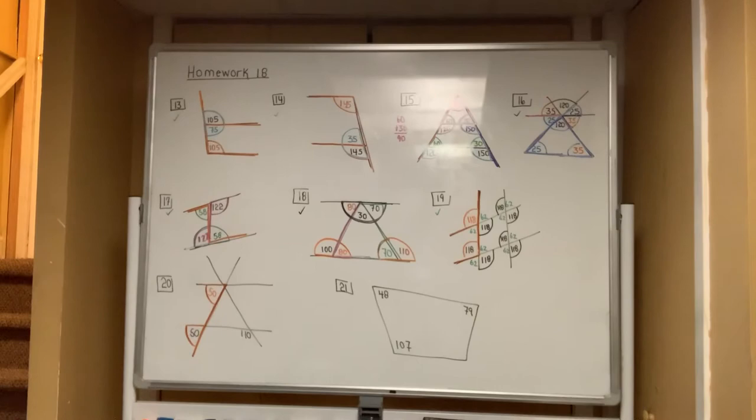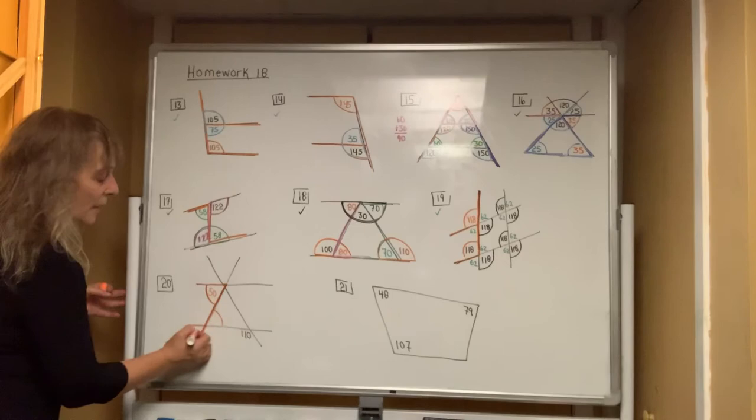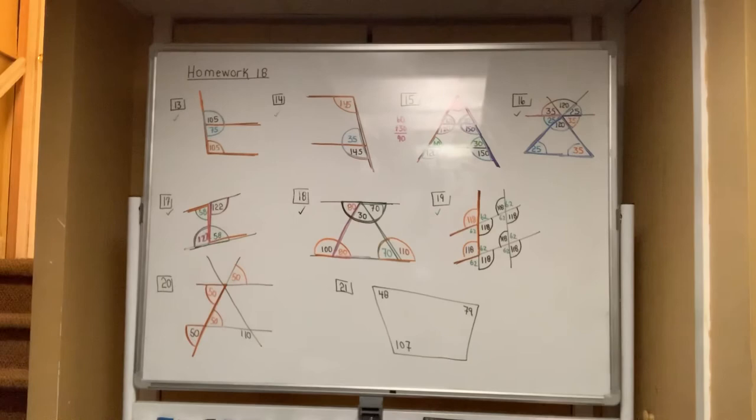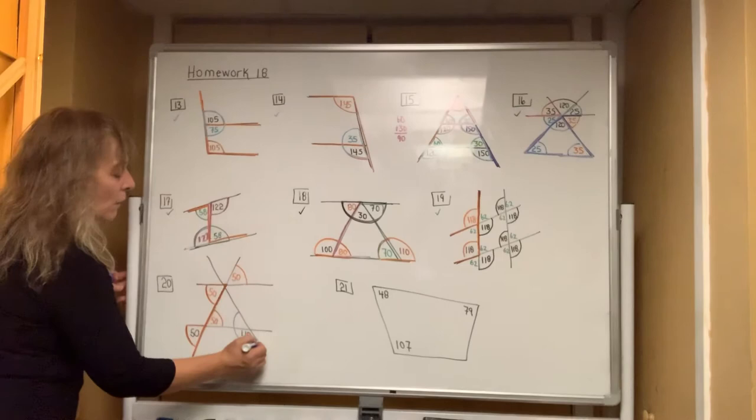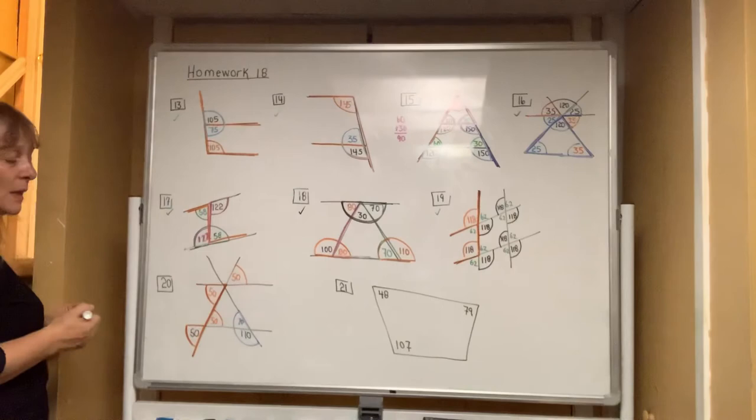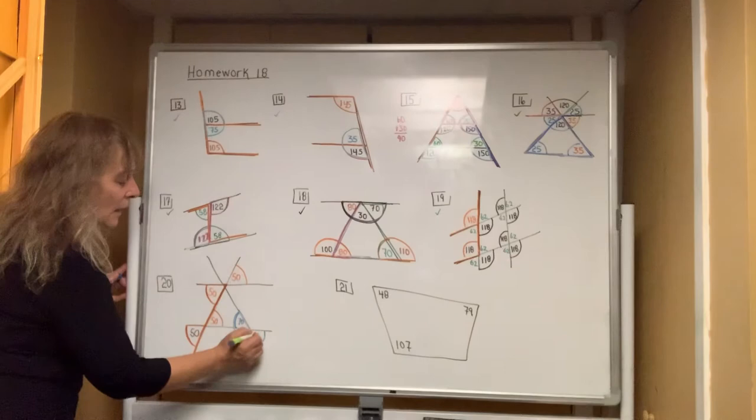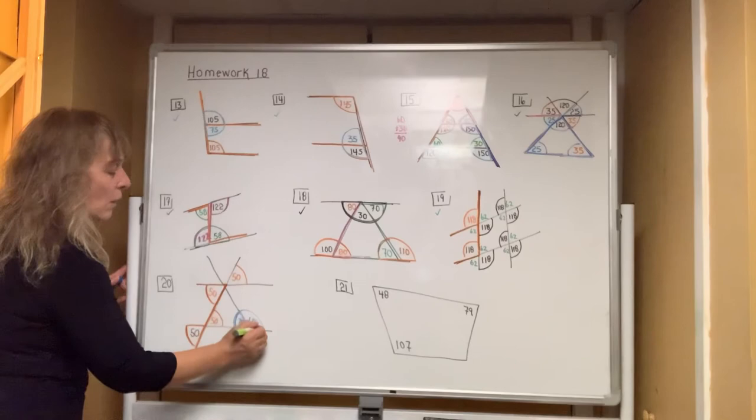Number 20 looks similar to ones we've done before. There's a bow tie here, which is 50, and another bow tie here, also 50. You have a half circle here, so if you know that 110 plus 70 gives 180, you're good. There's also a 70 bow tie and a 110 bow tie.